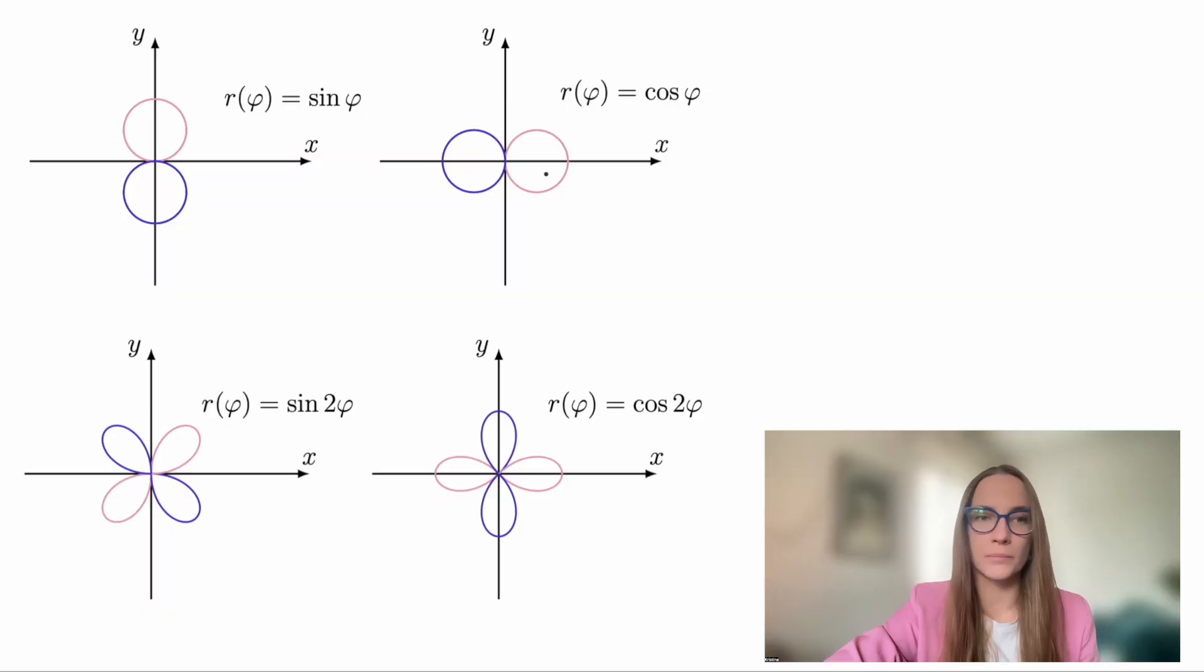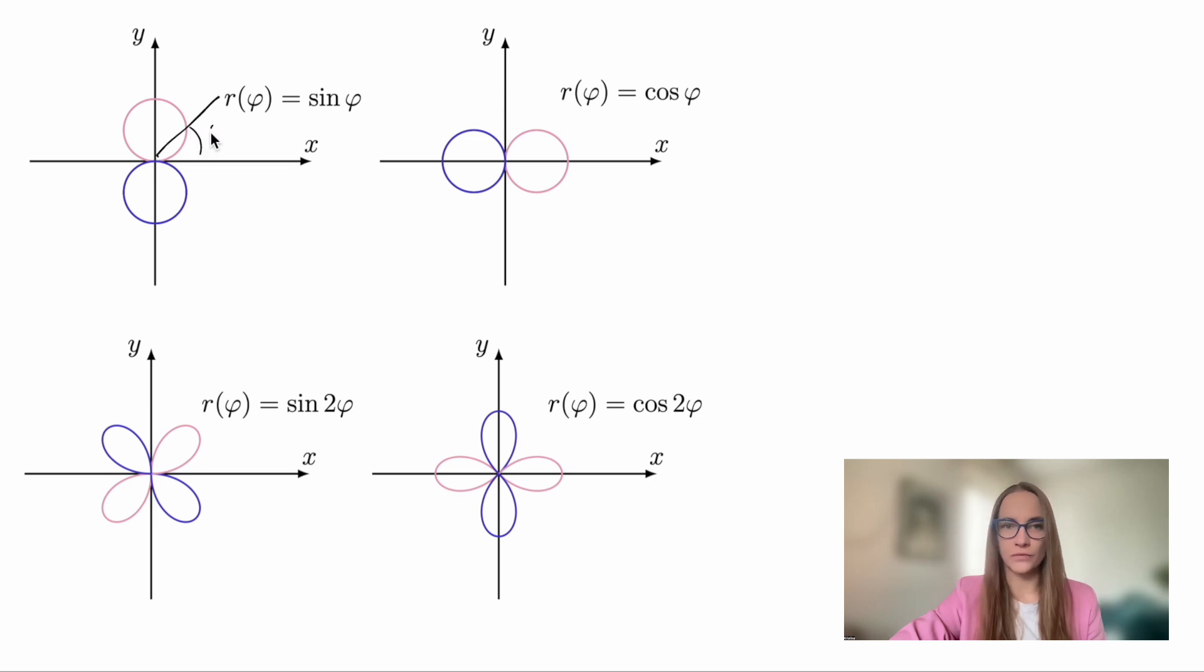Let's start simple. Let's recall how graphs of some functions look in polar coordinates. We will need them later to illustrate what's happening. Here, the pink line corresponds to the positive sign of the function and the blue line corresponds to the negative sign. The angle phi is measured from the x-axis in the following way.